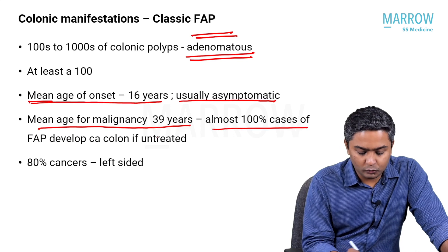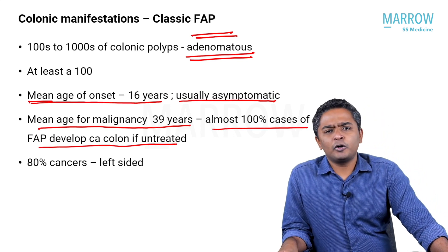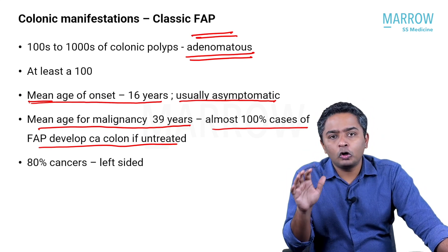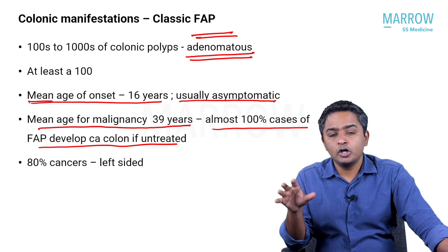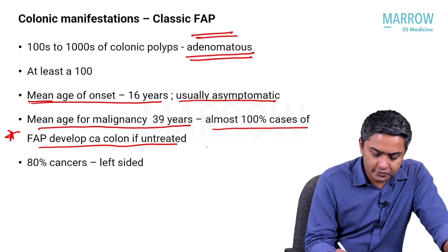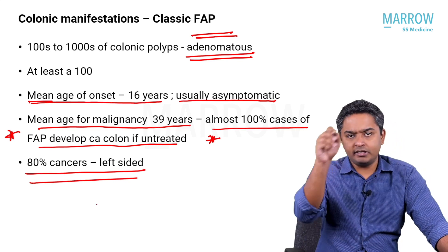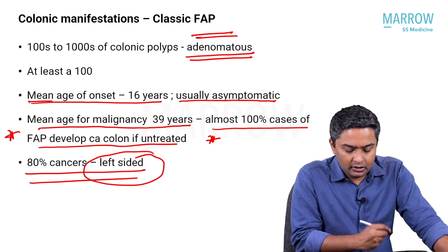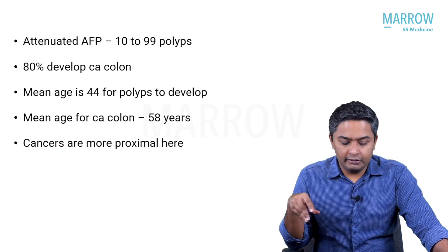Almost every patient with FAP will develop carcinoma colon. At least one of these thousands of polyps will definitely turn malignant. The chance of colonic malignancy, if untreated in an FAP patient, is almost 100 percent. Also, 80% of cancers in FAP are left-sided, meaning the descending colon is usually involved.